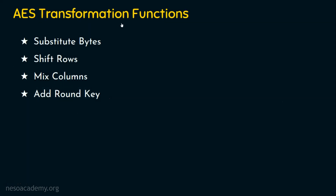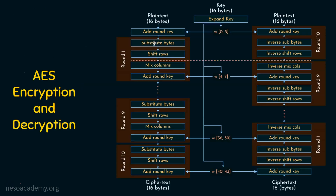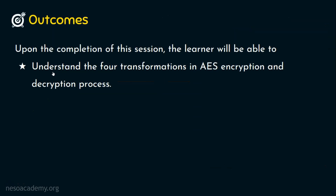We have now understood all the various transformations that happen in rounds. Sub bytes is substitution; shift rows is permutation; mix columns is substitution; and add round key is also substitution. All rounds have four transformation functions, and the last round has only three — mix columns is excluded. We have clearly understood what happens in every transformation function. I hope you now understand the four transformations in the AES encryption and decryption process. Thank you for watching.